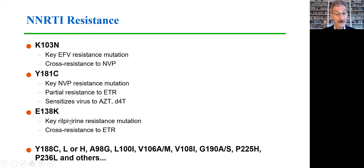The key resistance mutation for rilpivirine is found at position 138 and is E138K. But there are a host of other mutations, and now there are nearly as many NNRTI resistance mutations as there are protease inhibitor and integrase inhibitor resistance mutations.